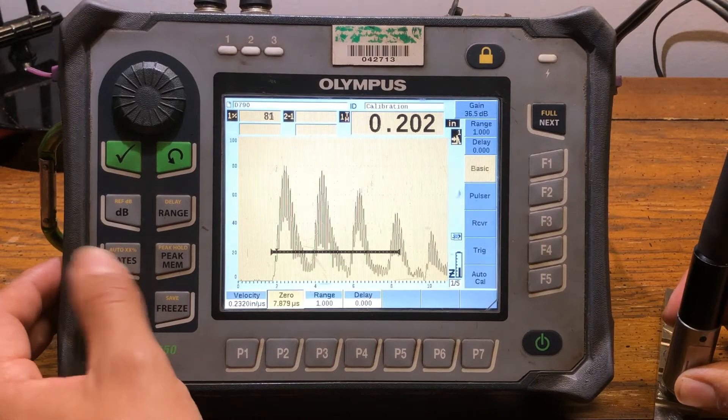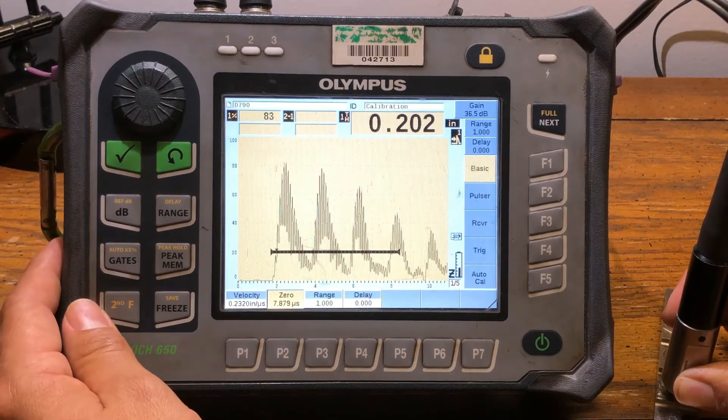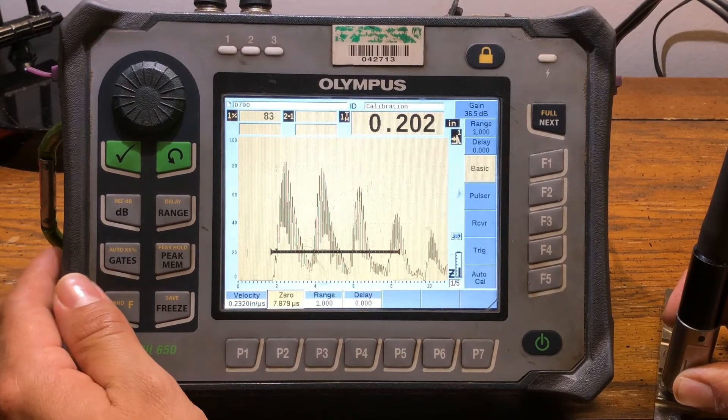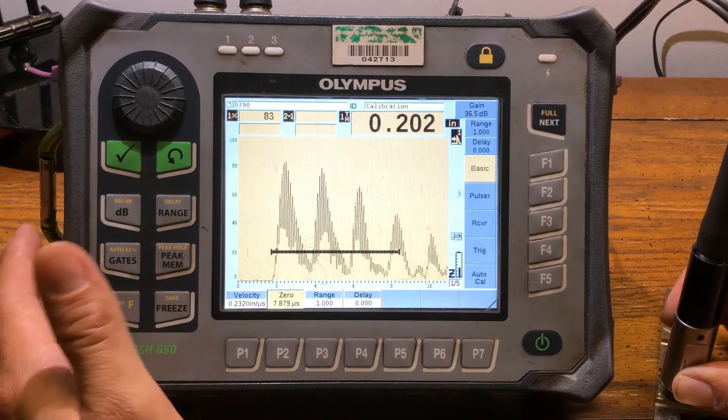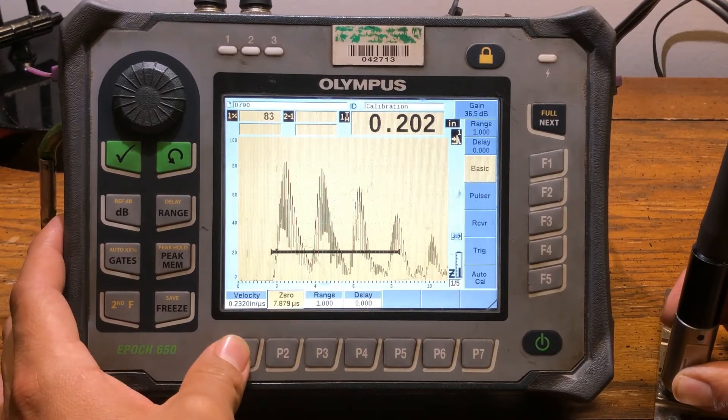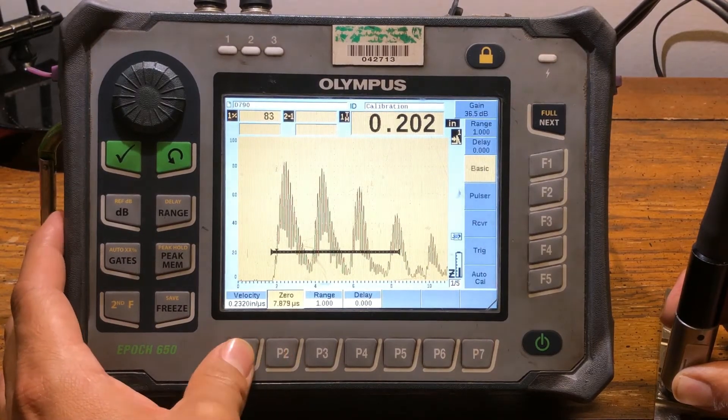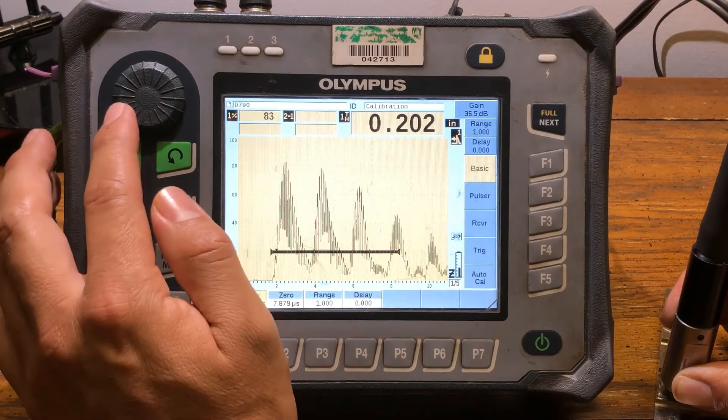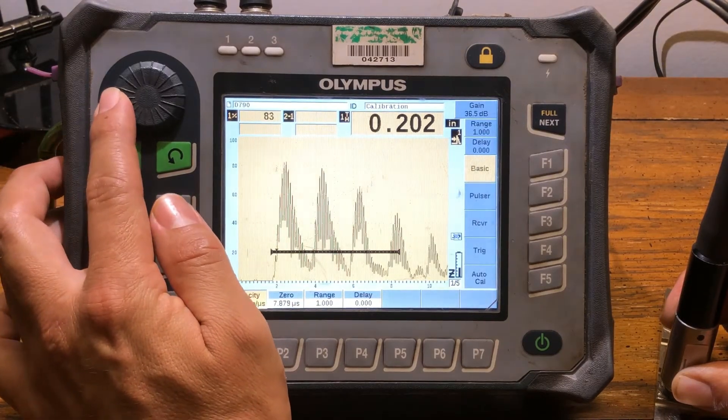It usually tells you by how much increments you could be off by, either two mils or three mils. As you can see right here, we could actually fine-tune it a little bit. So what I'm gonna do is hit velocity, mess with that a little bit, and see what happens if I go clockwise.